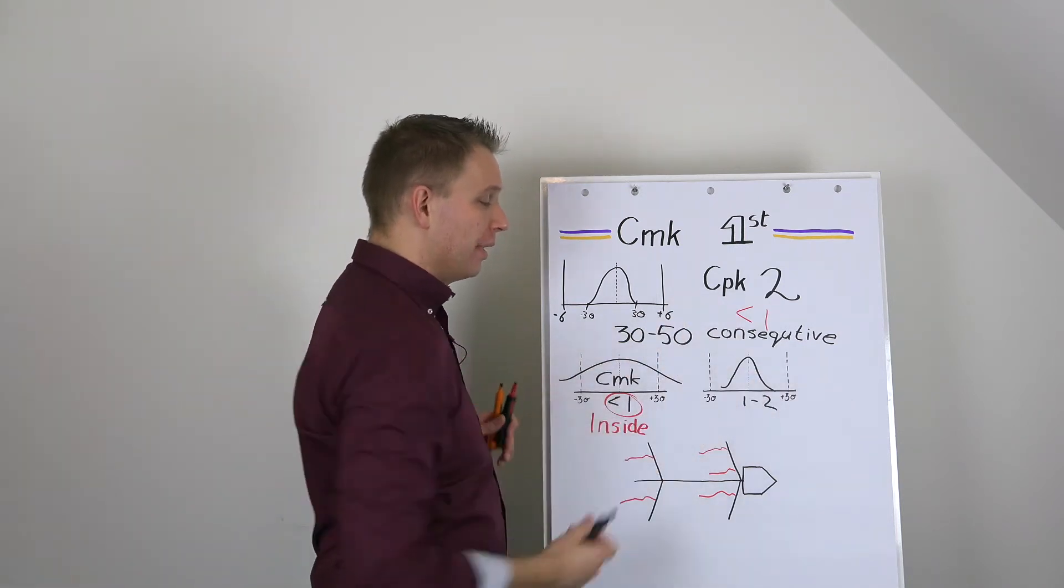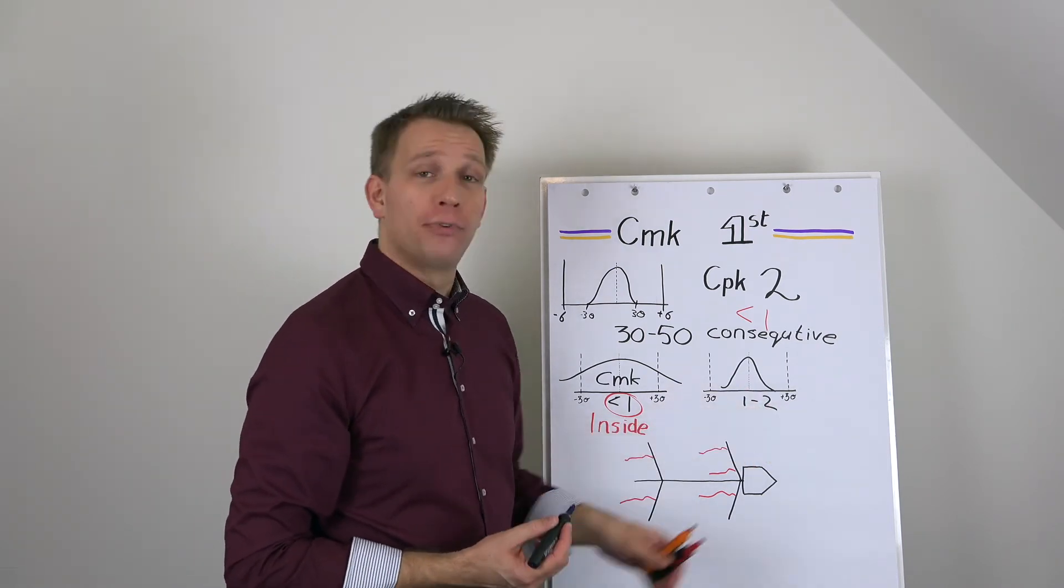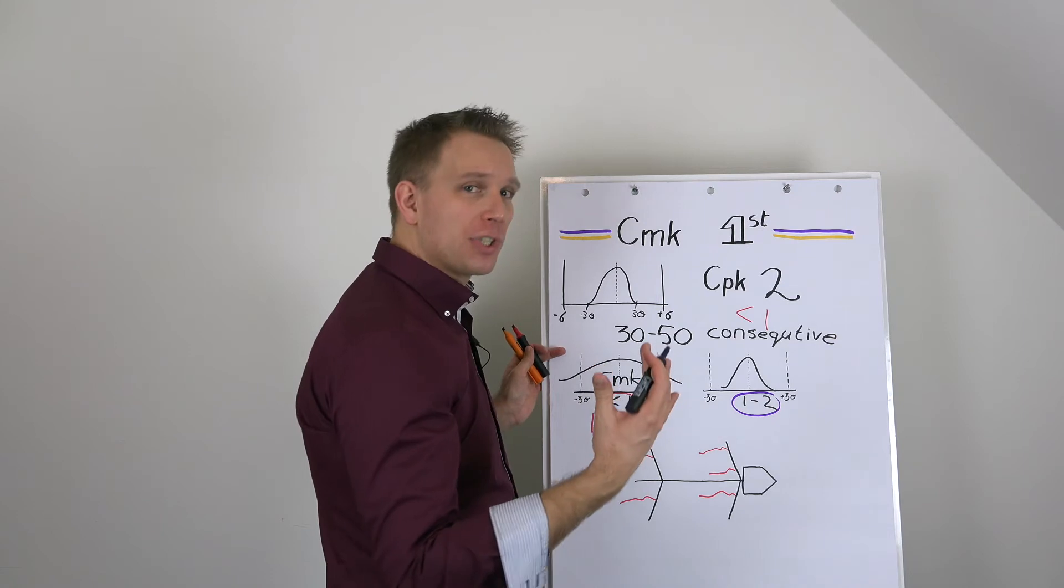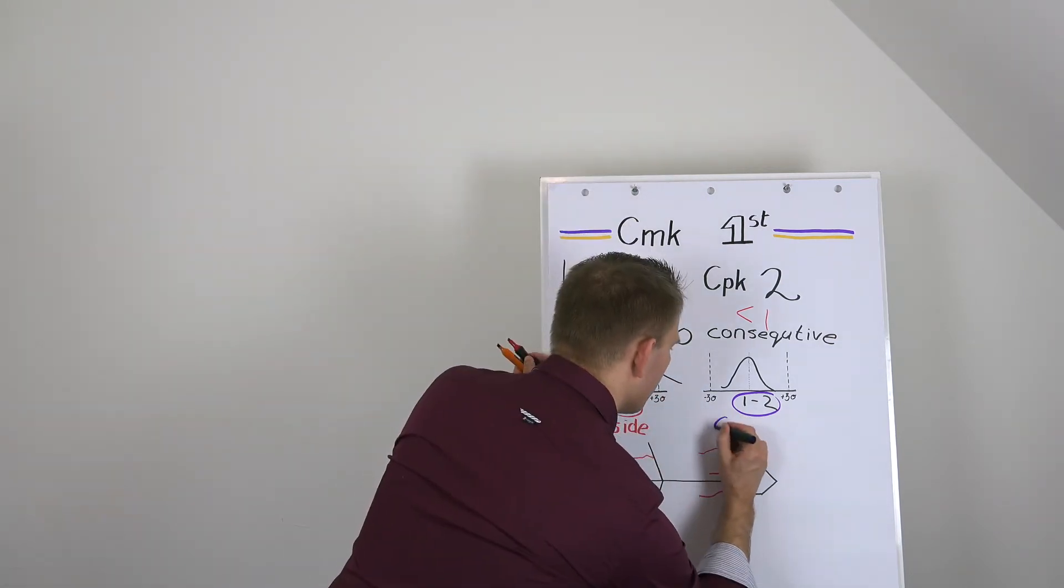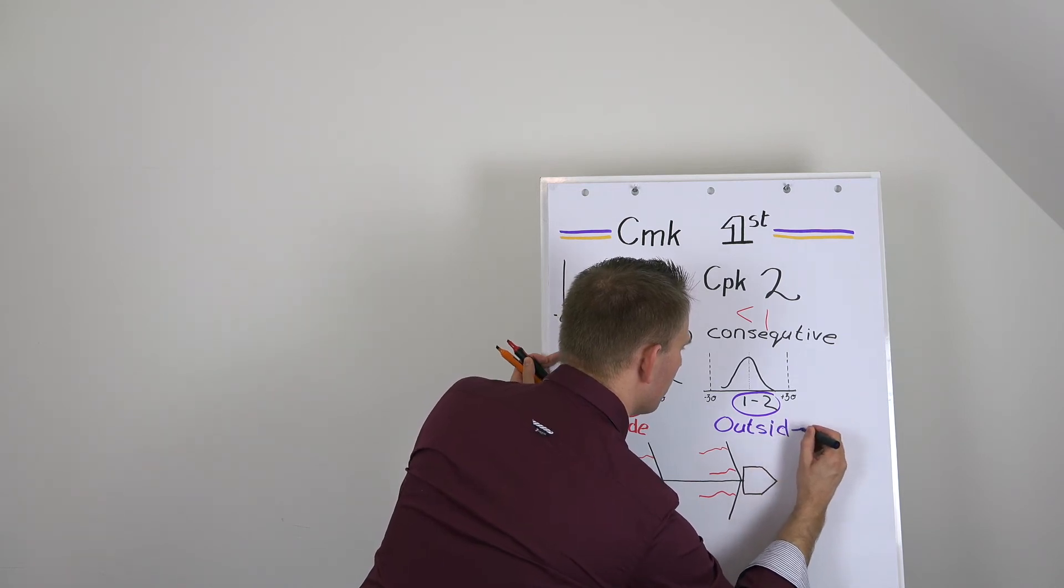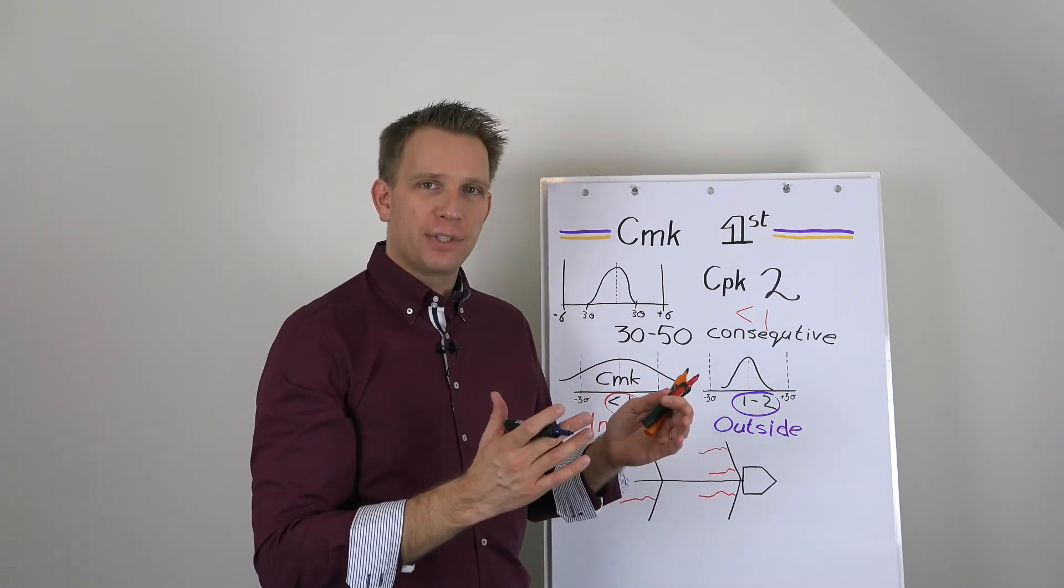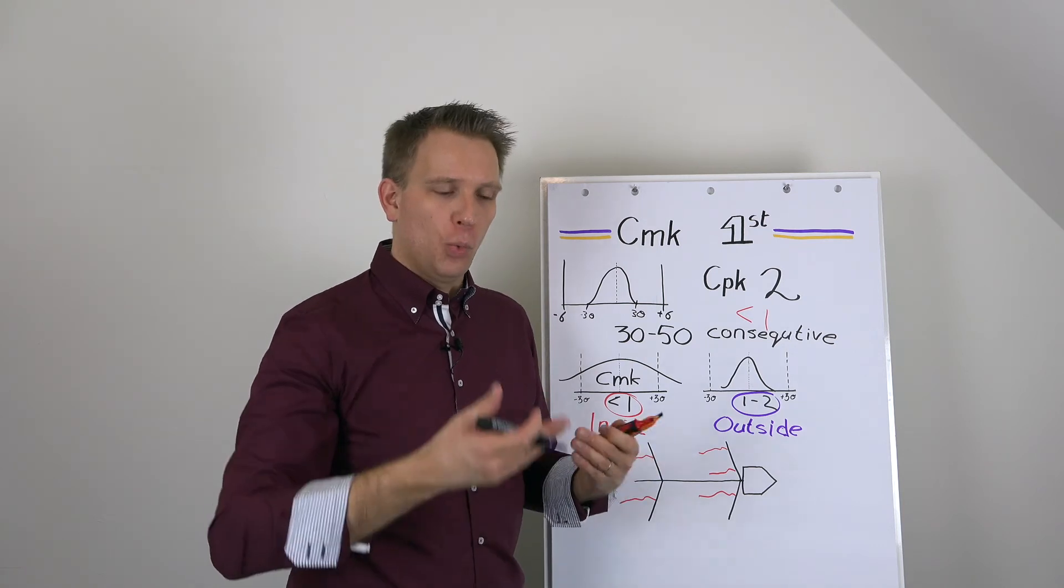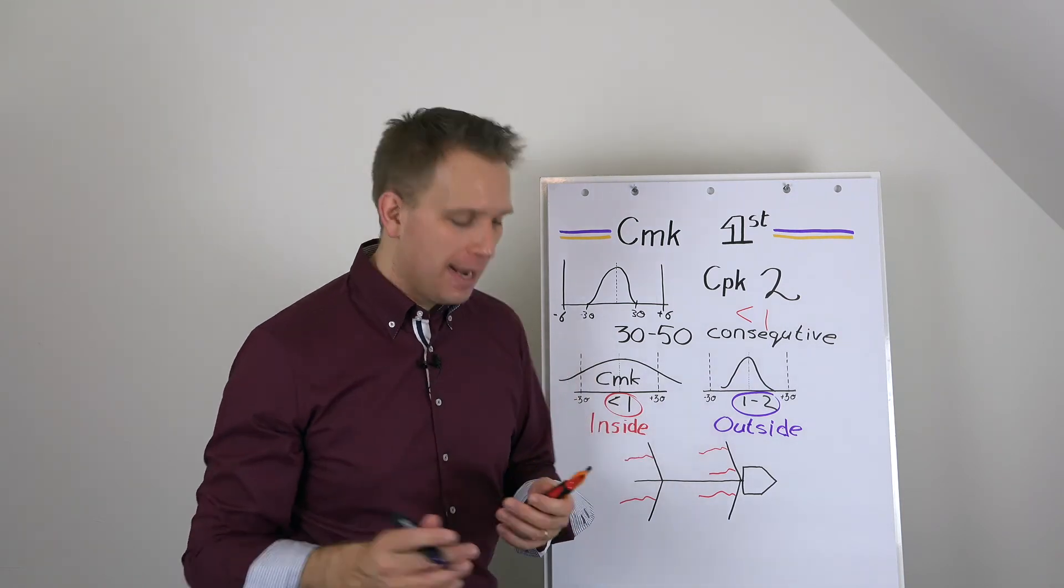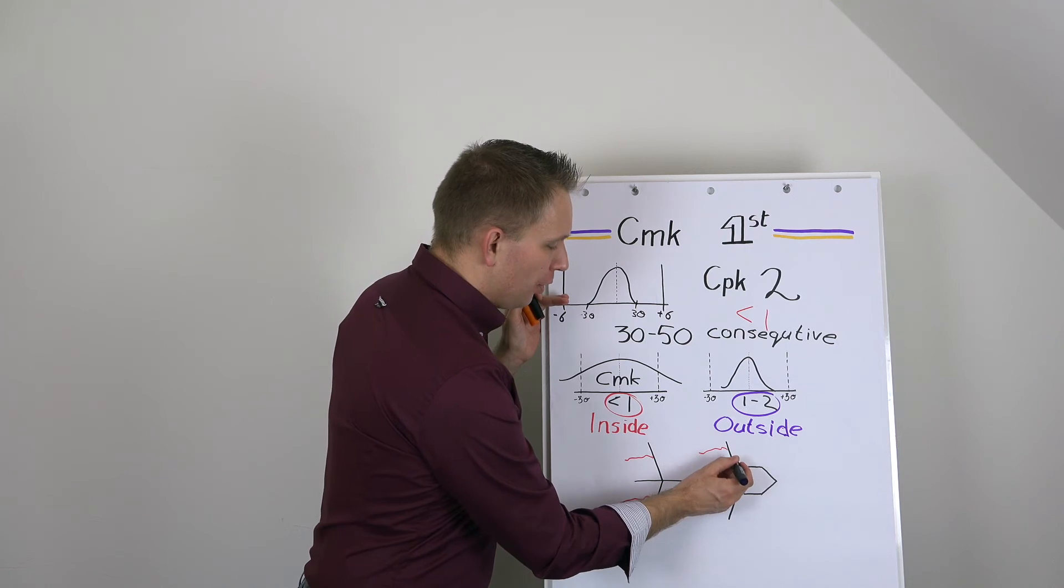While if we have a CMK that is quite reasonable, at least more than one, preferably closer to two, we will start to look much more for those outside factors. So these are things that happen between shifts, between material changes, when you do a new setup of the machine, between production batches from day to day. And what you will basically do is you add a lot of possible causes.